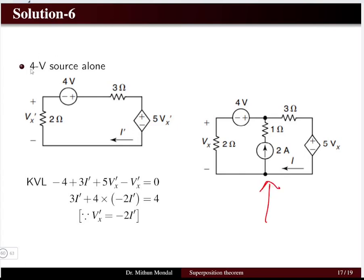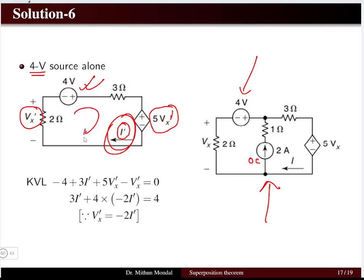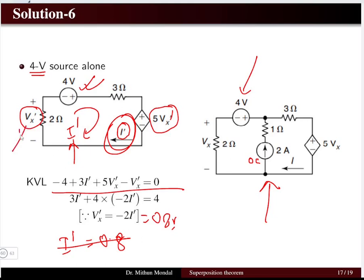For case 1, I keep the 4 volt source active and replace the 2 ampere current source with an open circuit. The current becomes I dash, the voltage drop across the 2 ohm resistor becomes Vx dash, and the dependent source magnitude becomes Vx dash. Applying KVL in this single mesh circuit gives I dash equal to 0.8 ampere and Vx dash equal to minus 2I dash, which is minus 0.8 volt — straightforward since it is a one-mesh problem.